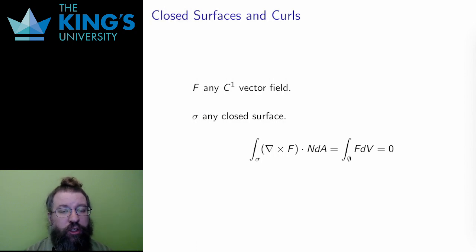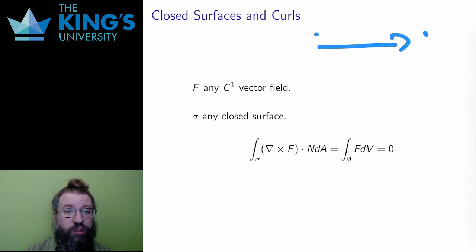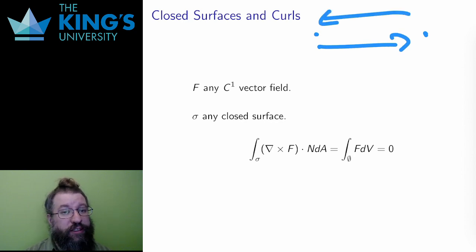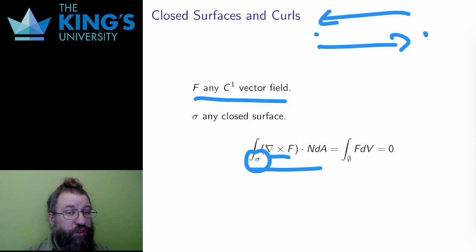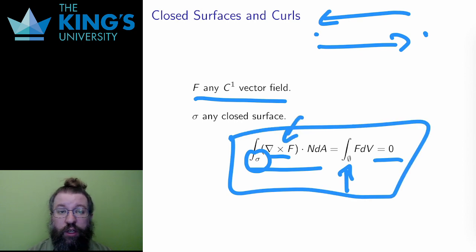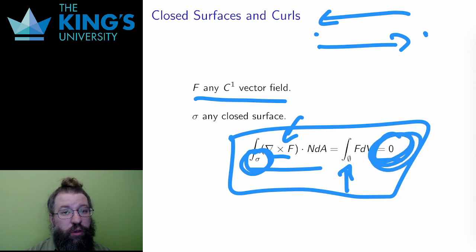After that specific example, let me talk about a general statement — again, this is about strategy. In the previous example, I used Stokes from left to right, starting with the line integral of a field. But there are also strategies which start on the right. The right side of Stokes is the flux integral of a curl. Say I have a field F and the surface is closed — a closed surface is one which encloses a region like a sphere, with no boundary. Then the left side of Stokes is an integral over a boundary, but if the surface has no boundary, the integral must be zero. This leads to a general statement: if I integrate a curl of a field over a closed surface, that integral will always be zero. If the field happens to be the curl of something and the surface is closed, then by applying Stokes' theorem the flux must be zero.